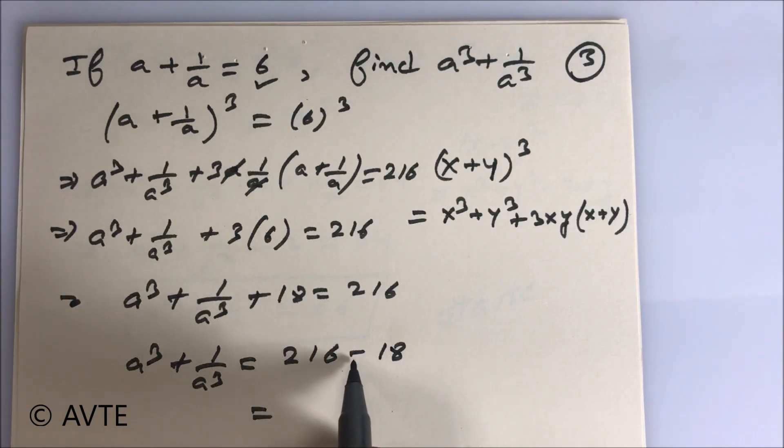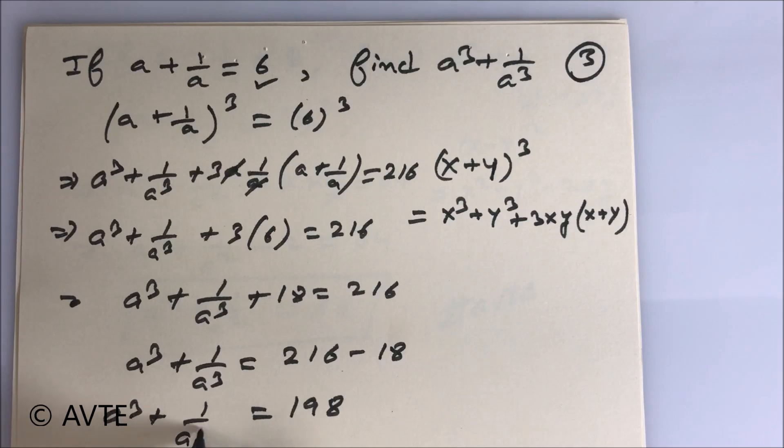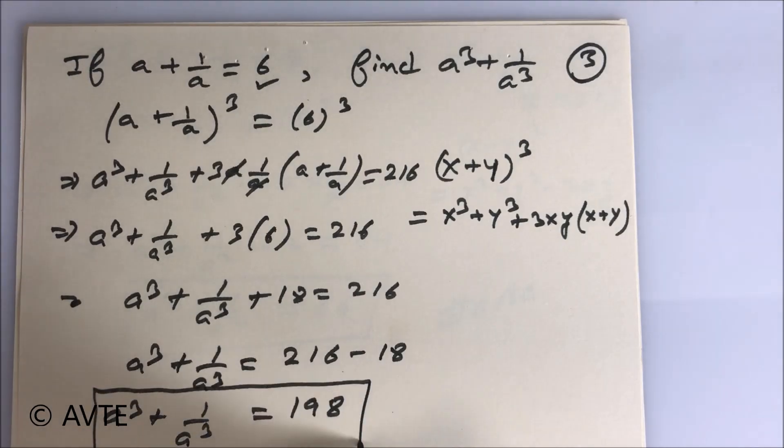If you subtract, 216 minus 16 that is 200, minus 2 that is 198. The value of a³ plus 1/a³ is 198.